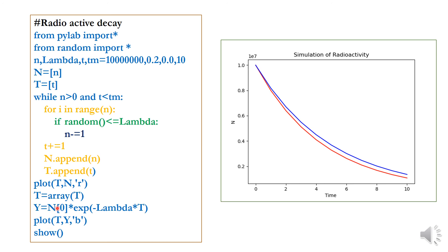For the theoretical curve, we compute N_theoretical equal to N0 times e raised to minus lambda times t, using the time list. This initial value N0 is the starting number of nuclei — for example, 10 crore — multiplied by e to the power of minus lambda t. We then plot t versus N_theoretical in blue color.